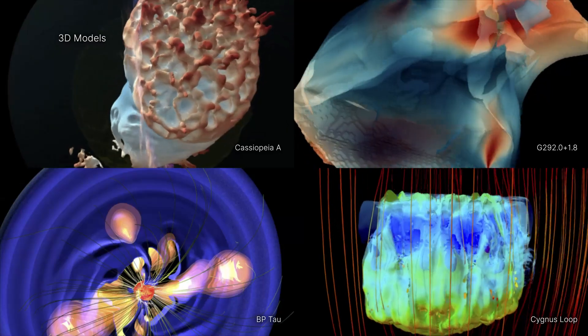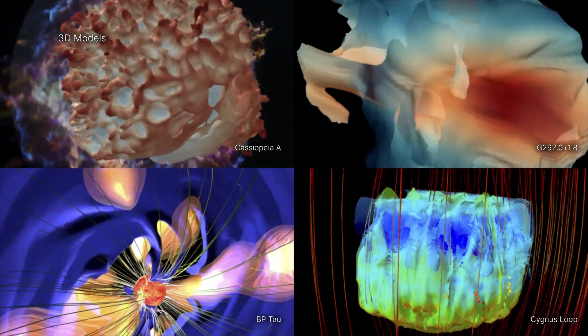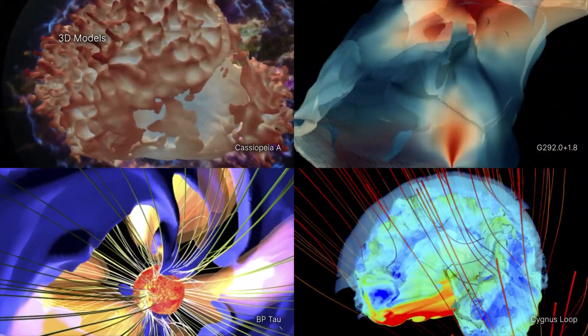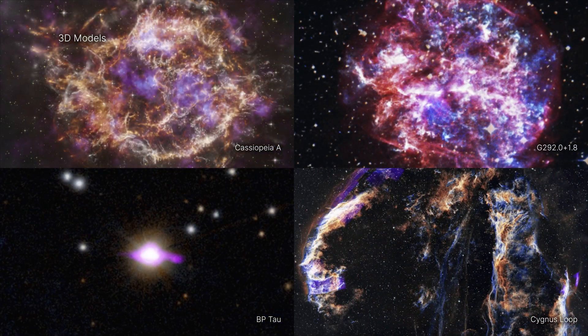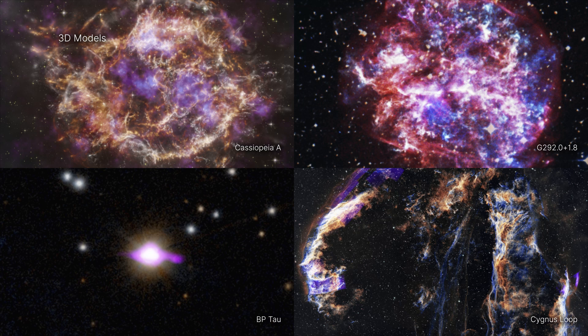These 3D models are based on state-of-the-art theoretical models, computational algorithms, and observations from space-based telescopes like Chandra that give us accurate pictures of these cosmic objects and how they evolve over time.